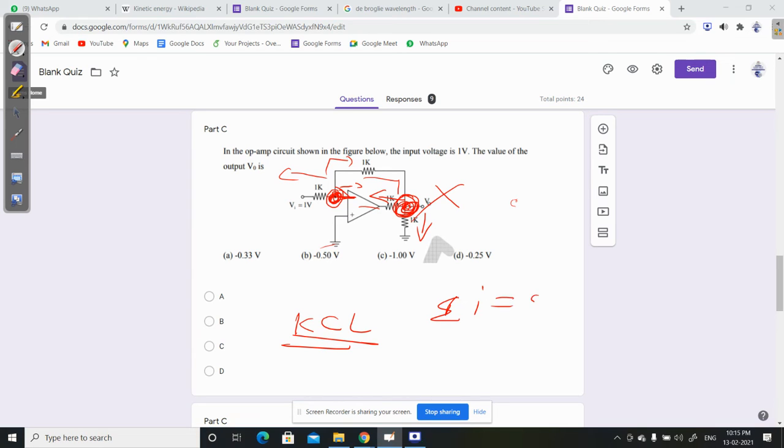Summation of i equals 0, or summation of delta V by R equals 0. If you do node analysis, you need to consider the current. When current flows into the node, you apply this equation.